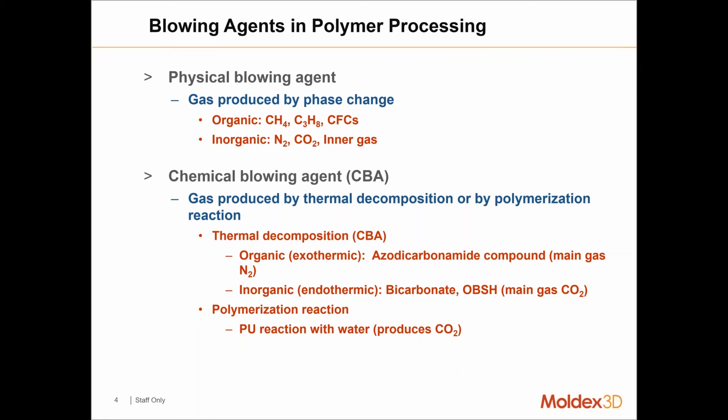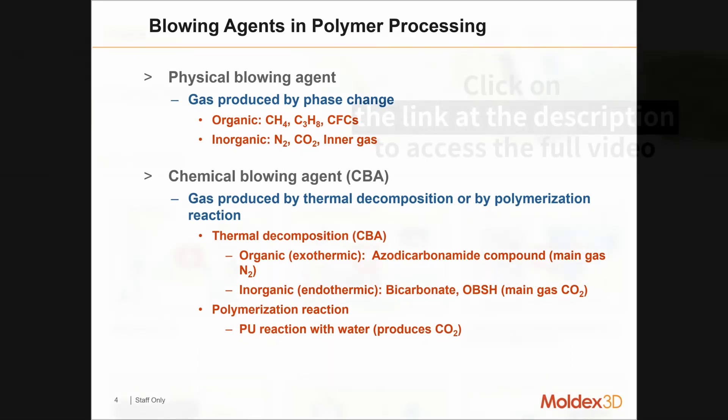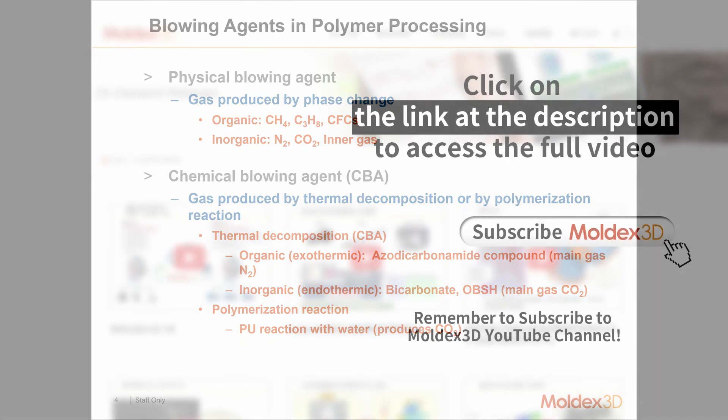When the gas is under pressure inside of the injection unit, it stays in solution, dissolved into the plastic melt. Then when you inject that and release the pressure as the plastic enters the mold, the gas is allowed to come out of solution and you're left with a foam microstructure inside of your part. So this is a physical process — basically gas being dissolved into the molten polymer and then coming out when the pressure is released.